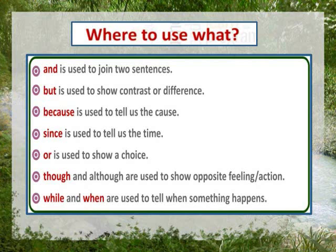Next is 'or'. Or is used to show a choice or alternative. Or ka use hum alternative — choice ko show karne ke liye karte hain. Like: would you like to have a cup of tea or coffee? Toh yahaan par hume choice di ja rahi hai coffee or tea mein. Inhe show karne ke liye humne or word ka use kia hai.